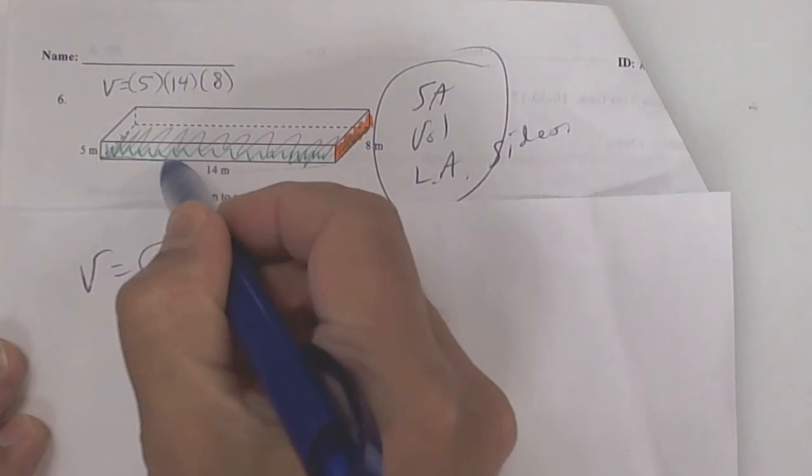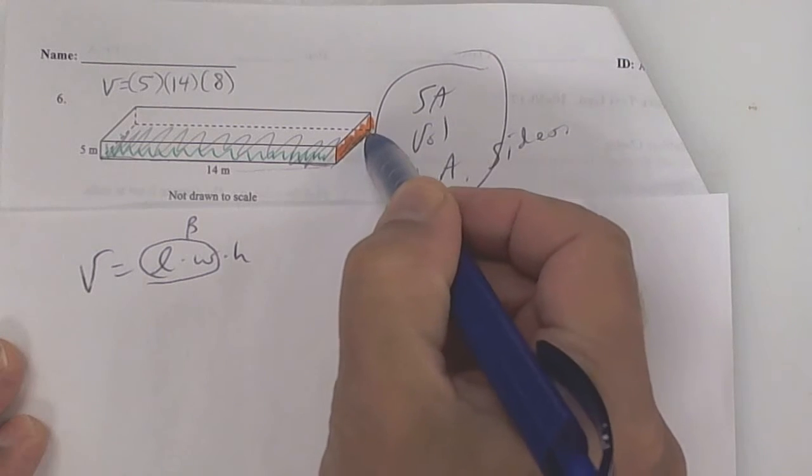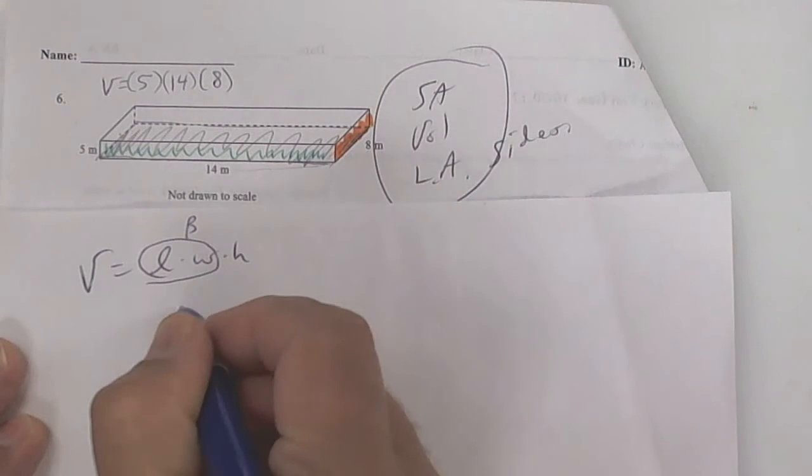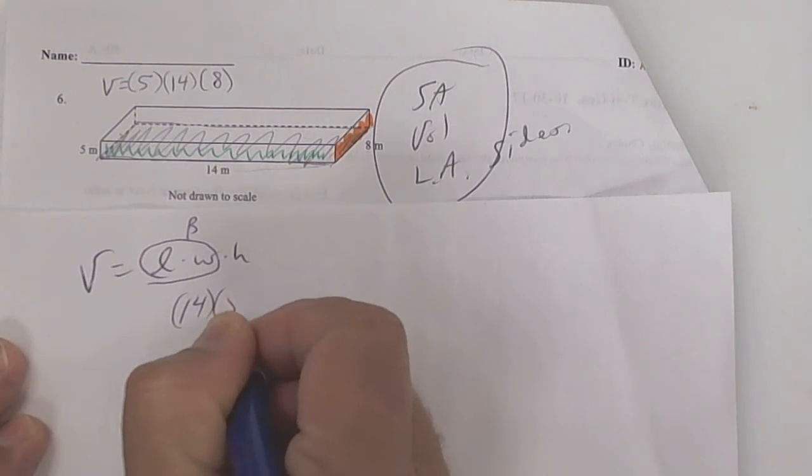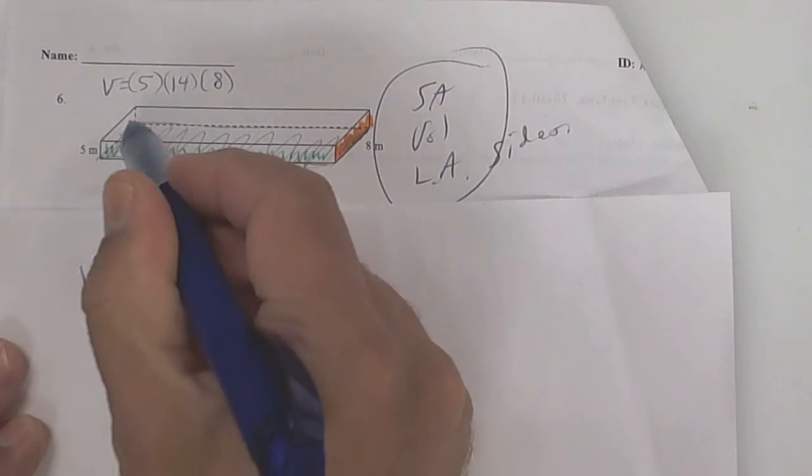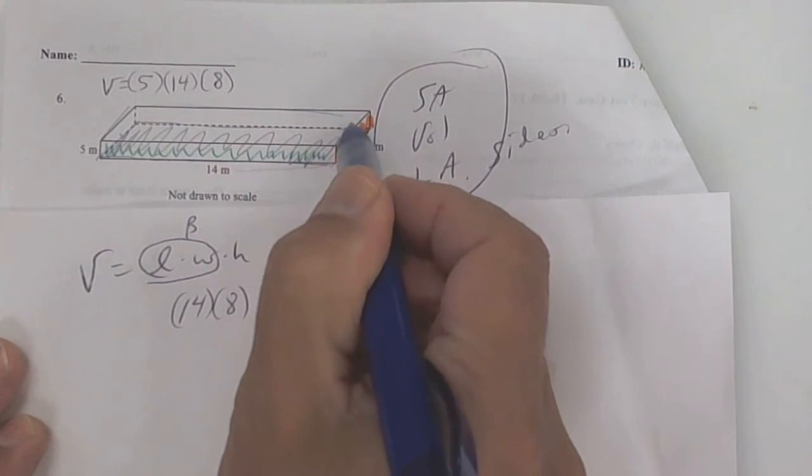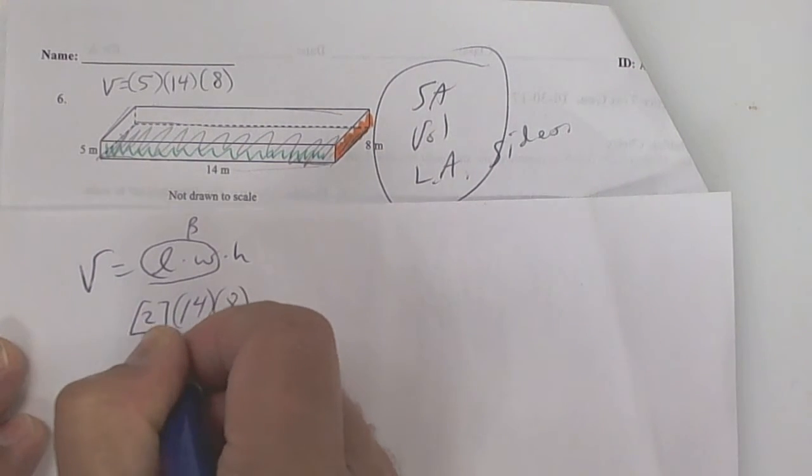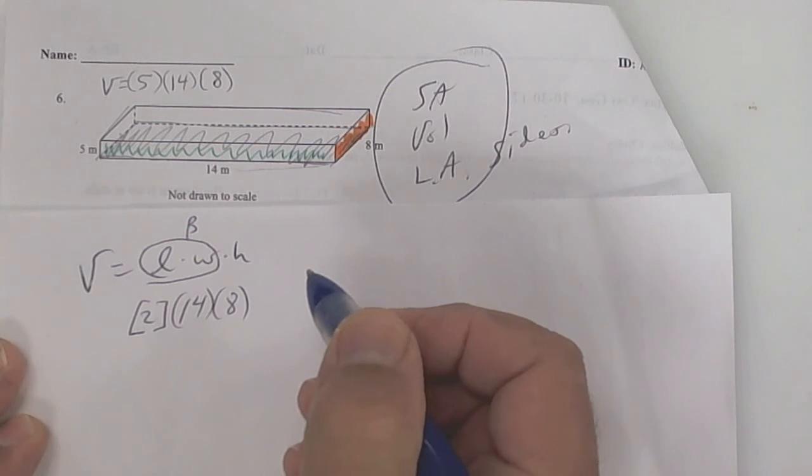So you're going to take 14 times 8. But the top up here is the same - the top and the bottom are the same - so multiply by 2.